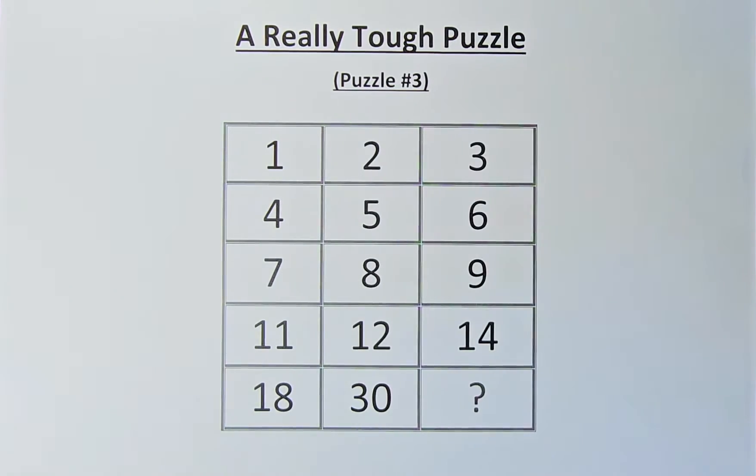This is puzzle number 3. The numbers are as follows: In the first row, we have 1, 2 and 3. In the second row, we have 4, 5 and 6. In the third row, we have 7, 8 and 9.